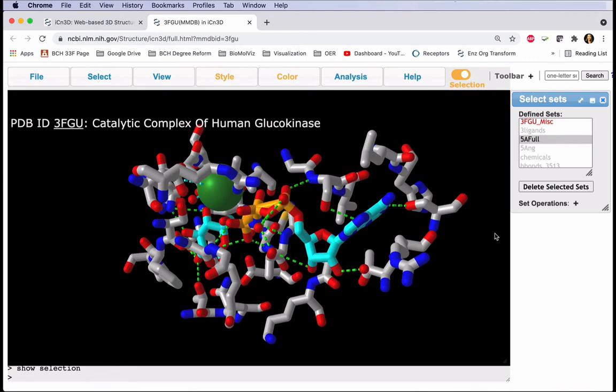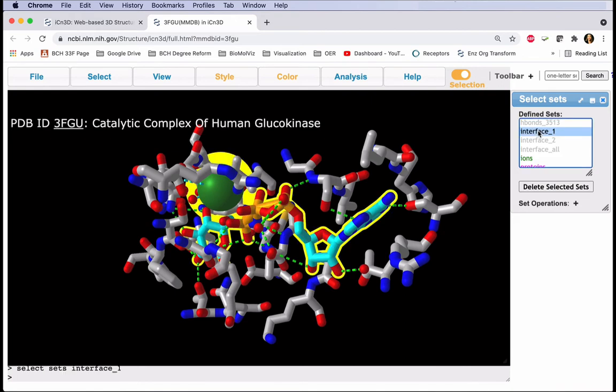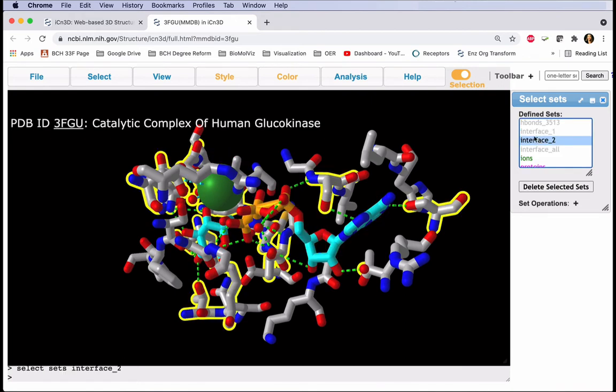When we selected the interface, that showed our hydrogen bonds, so we can select Interface 2 here, which is showing all of those hydrogen bonding residues.